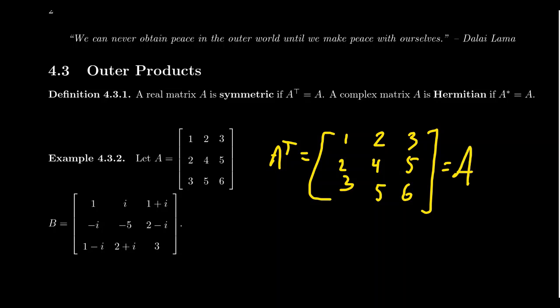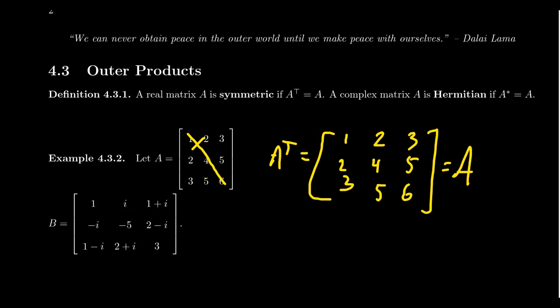When you have a symmetric matrix, you have these elements on the main diagonal, and the things off the diagonal — in some respect, you're reflecting them to the other side. We call the matrix symmetric because with regard to the diagonal of the matrix, you have this line of symmetry — hence a symmetric matrix. It's a matrix which is equal to its own transpose.